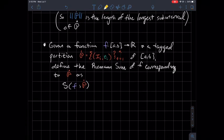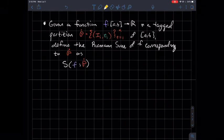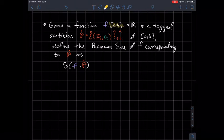All right, so finally, what's a Riemann sum? Given a function f whose domain is a to b, and let's say you've also got a tagged partition of this interval a to b, so p dot here is a tagged partition of this interval from a to b, we'll define the Riemann sum of this function corresponding to that partition p dot.